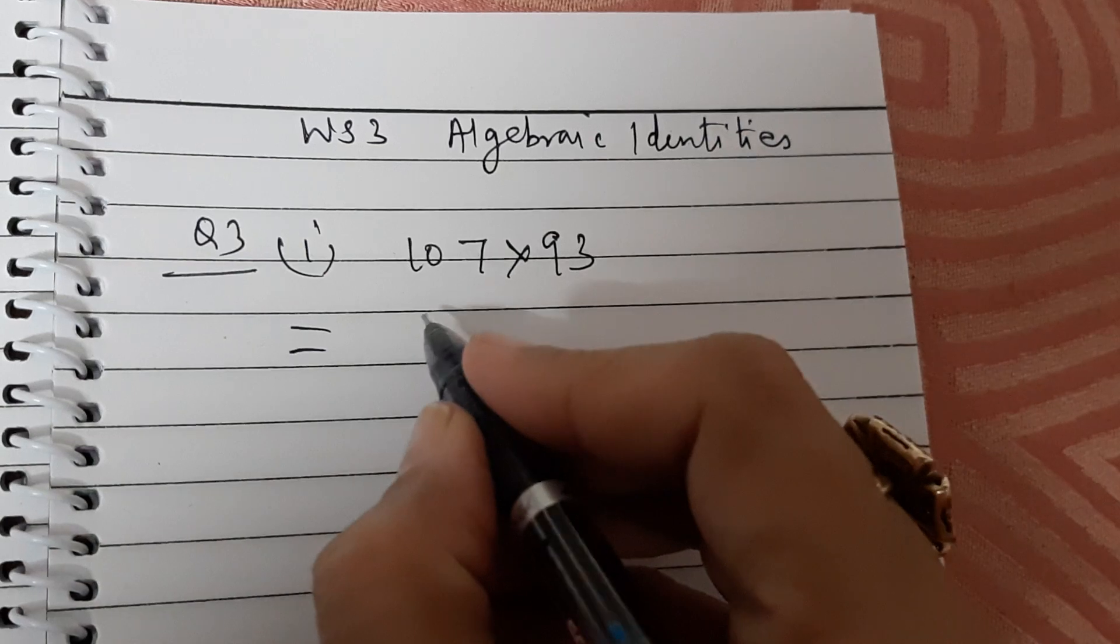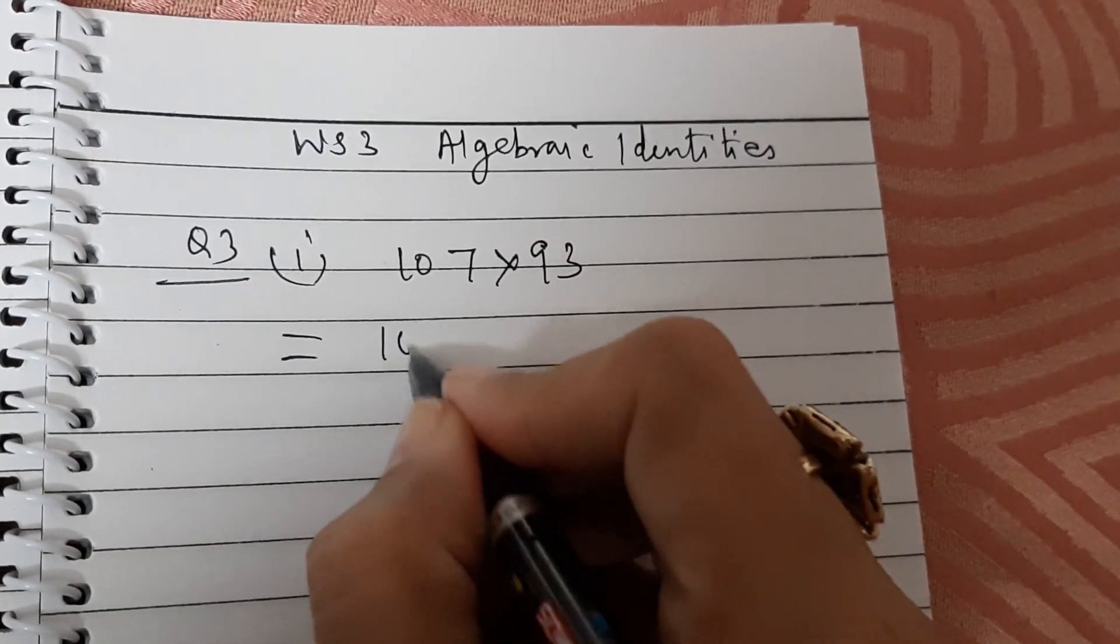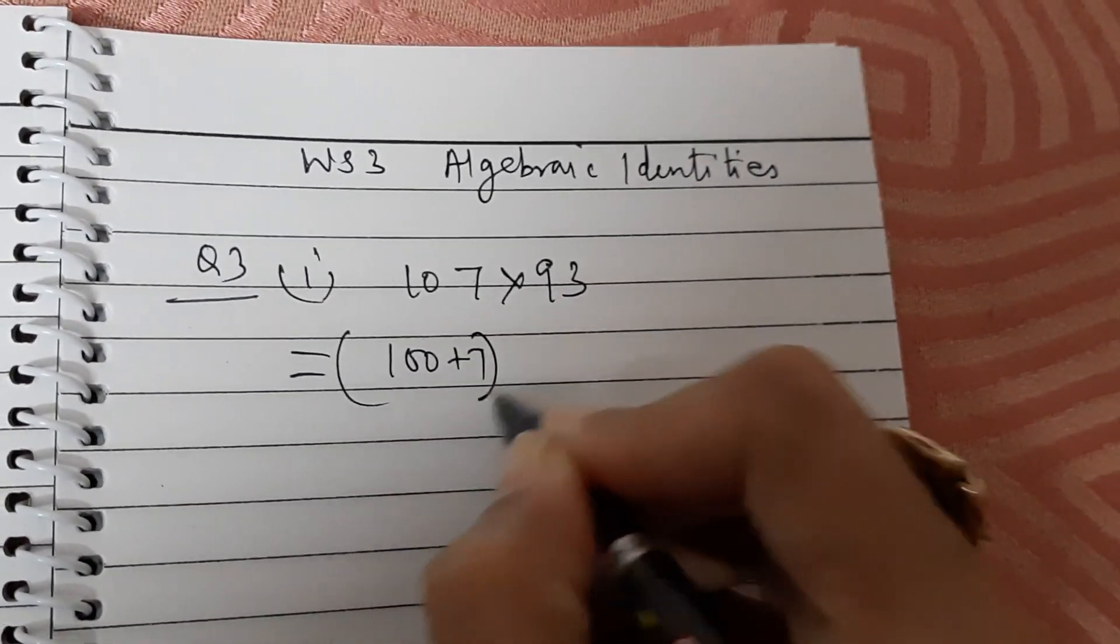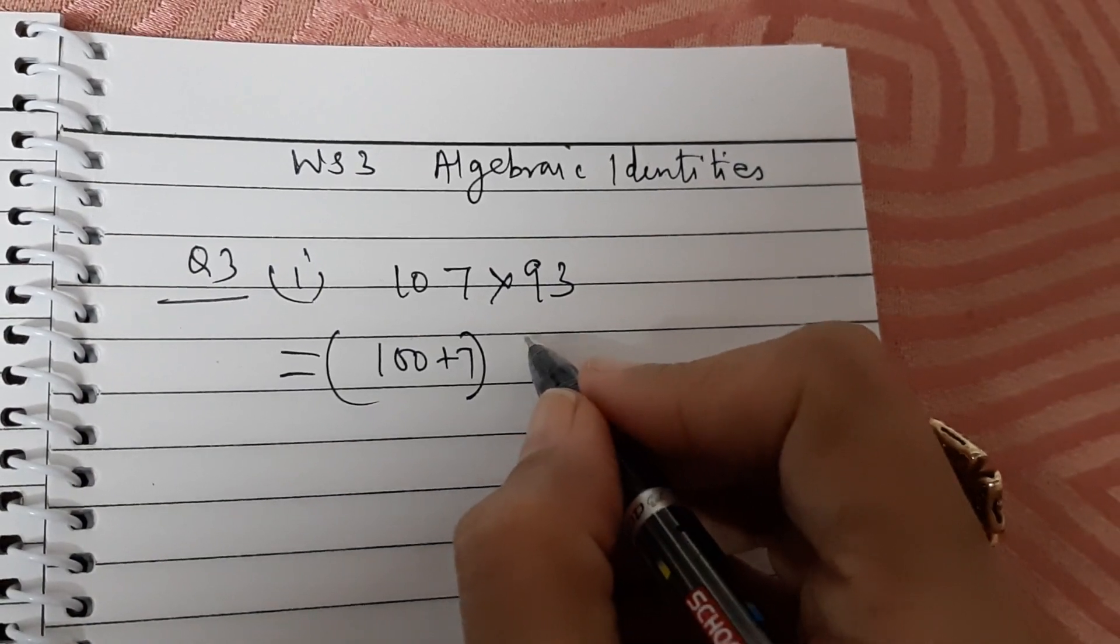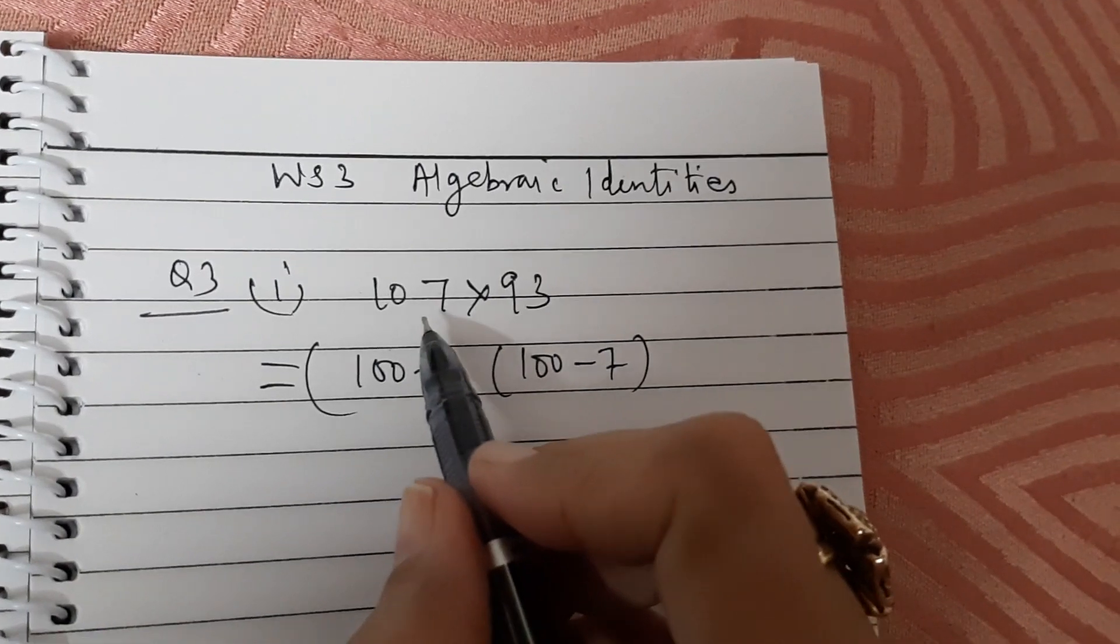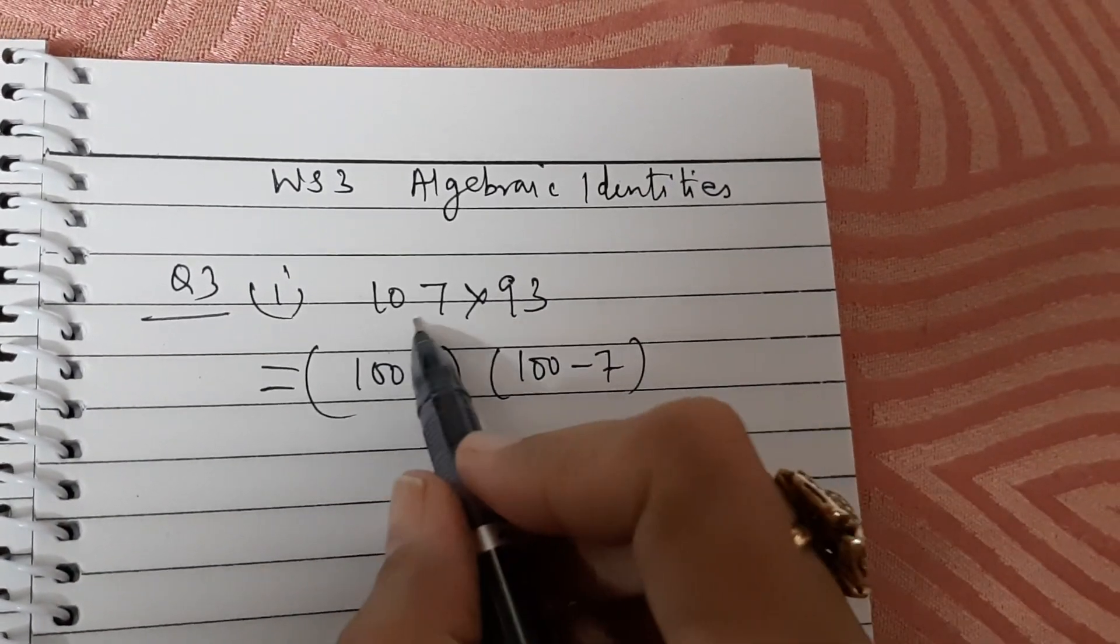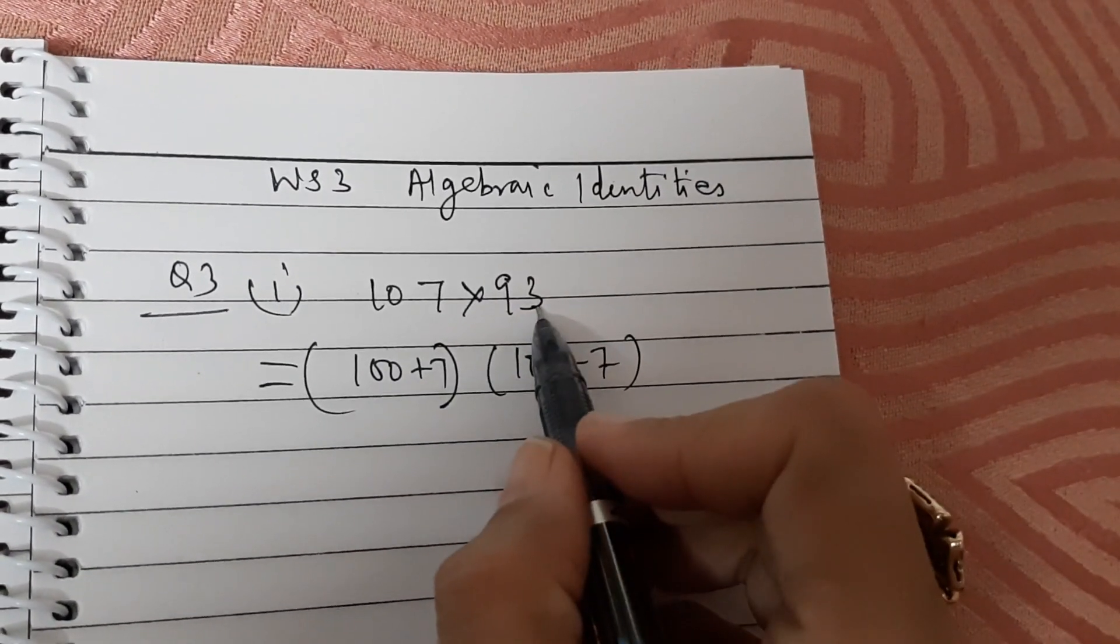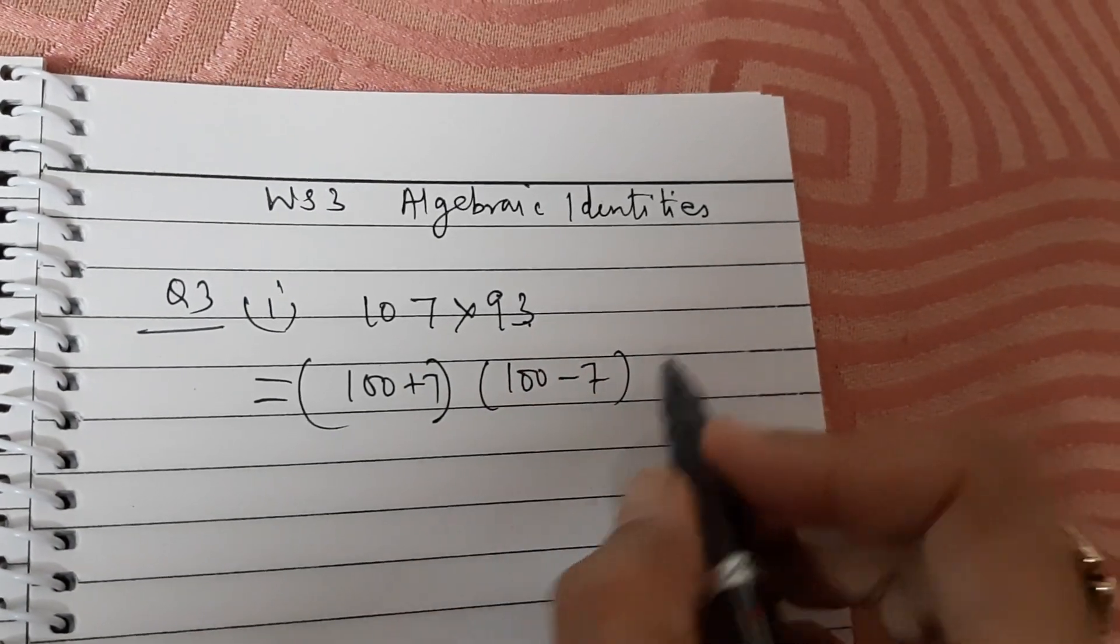Now 107 can be written as 100 plus 7 and 93 can be written as 100 minus 7. Basically we have to think of arranging the two given numbers for which we are finding the product in the form of a plus b into a minus b so that we can use the identity a² minus b².